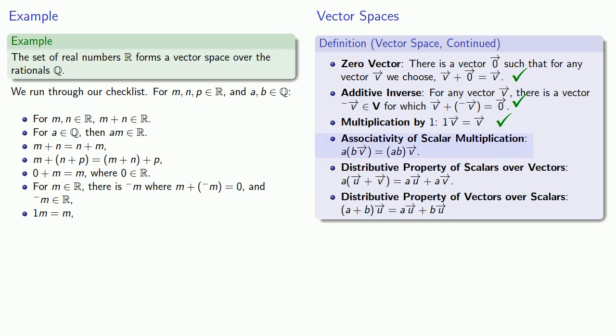Associativity of scalar multiplication, A times BM is in fact the same thing as AB times M. And we have our two distributive properties of our scalars, which were elements of our set of rational numbers, over our vectors, which were our real numbers. And so a scalar A times the sum M plus N is in fact AM plus AN. So we have left distributivity and we'll check right distributivity. If I have A plus B times M, I do actually get AM plus BM.